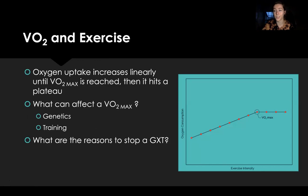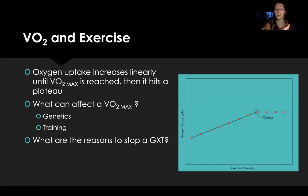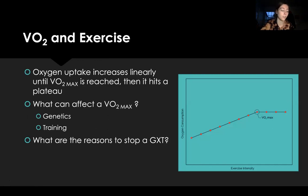What can affect your VO2 max? Number one is genetics, and number two is training status. If you're blessed with good genetics, you'll already have a decent VO2 max, but you can also train and increase it further through aerobic training.